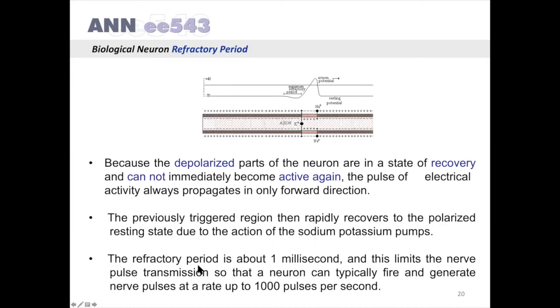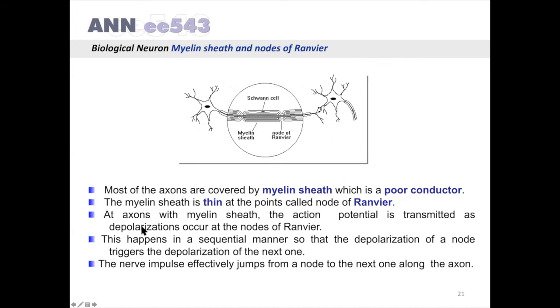The refractory period is about 1 millisecond, and this limits the nerve pulse transmission so that a neuron can typically fire and generate nerve pulses at a rate up to 1000 pulses per second.